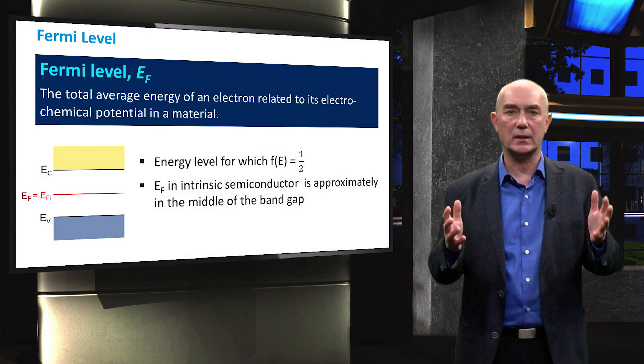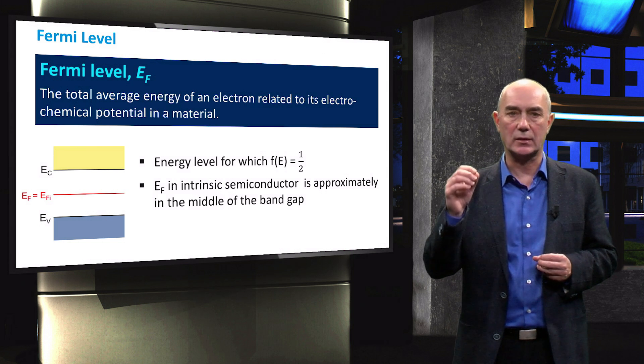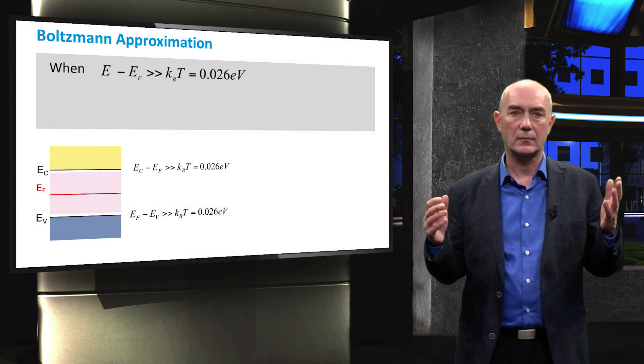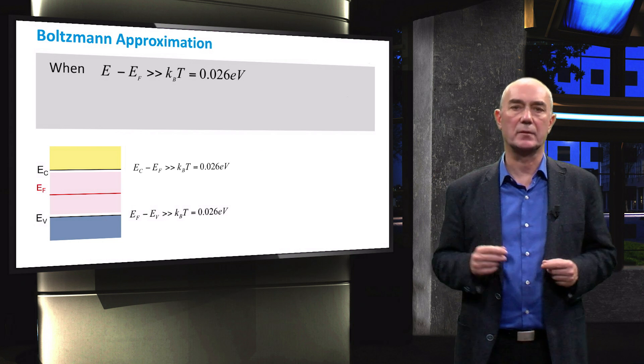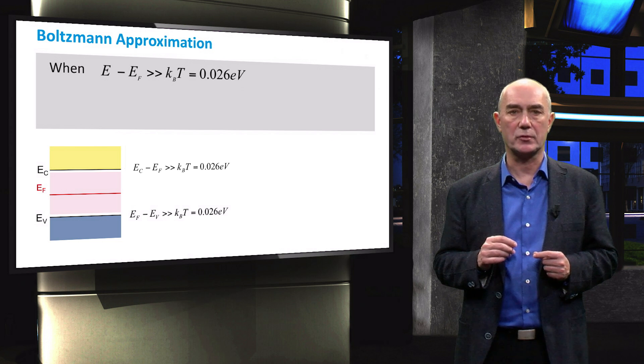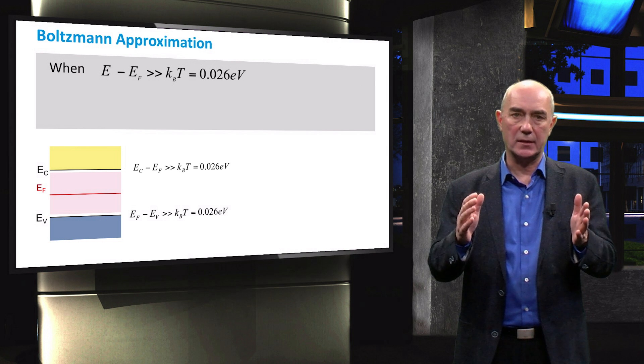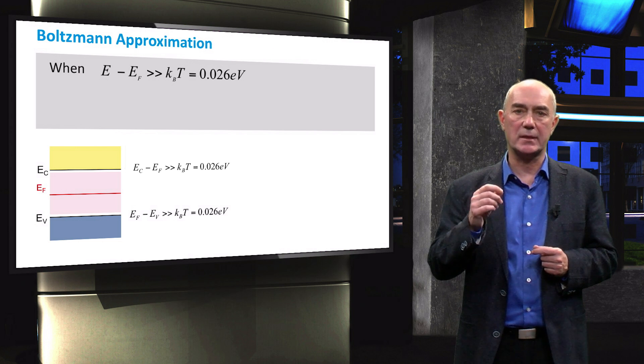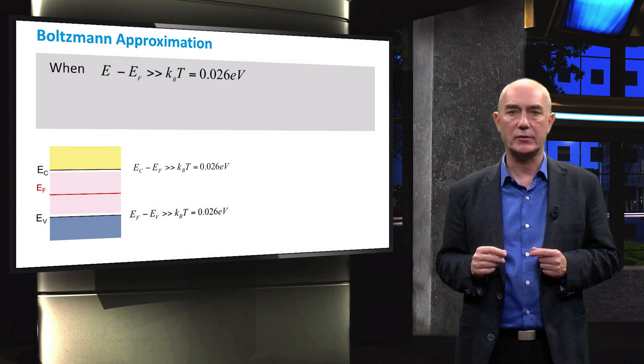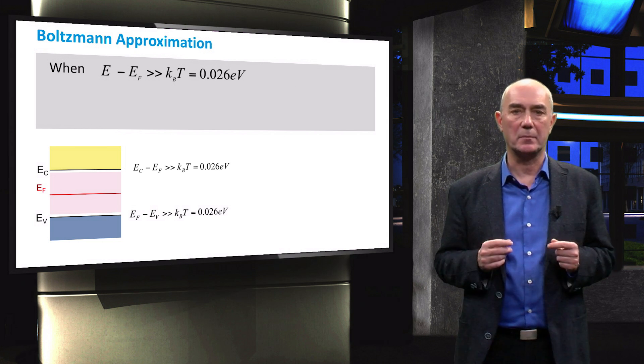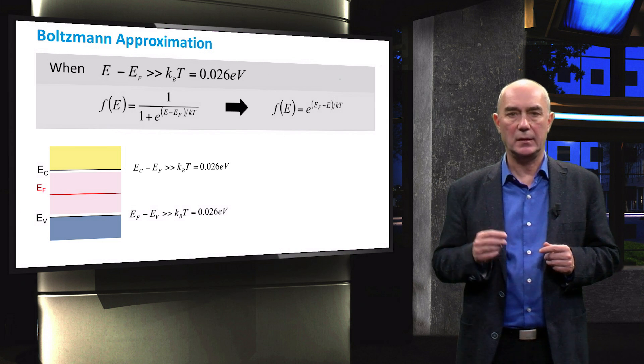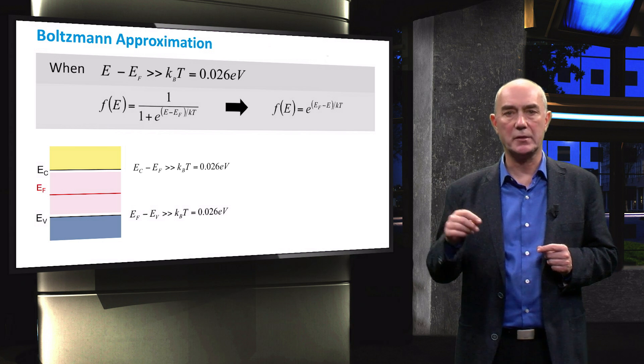The position of the Fermi level in an intrinsic semiconductor is close to the middle of the band gap. Depending on the position of the Fermi level in the band gap, we can simplify the Fermi-Dirac distribution function. If the Fermi level is within 3 times kb times t from both the conduction band edge and the valence band edge, so in the pink area of the band diagram, we can use this simplified equation. This equation is known as the Boltzmann approximation.